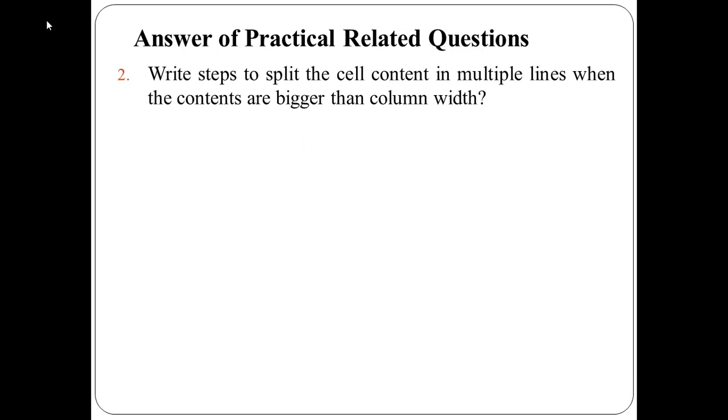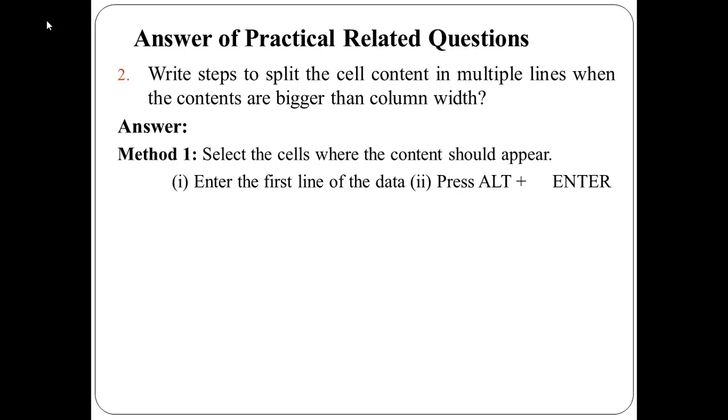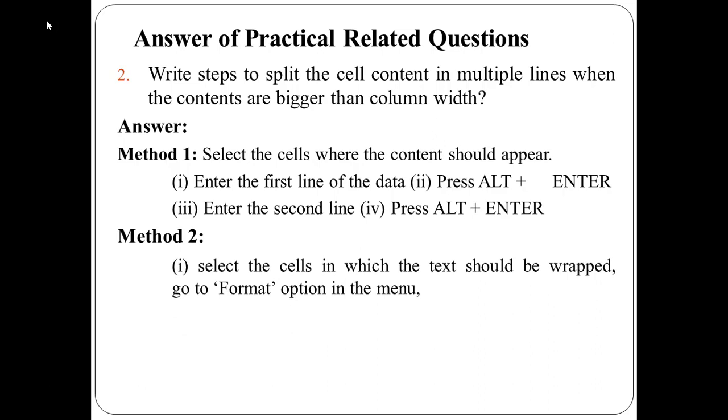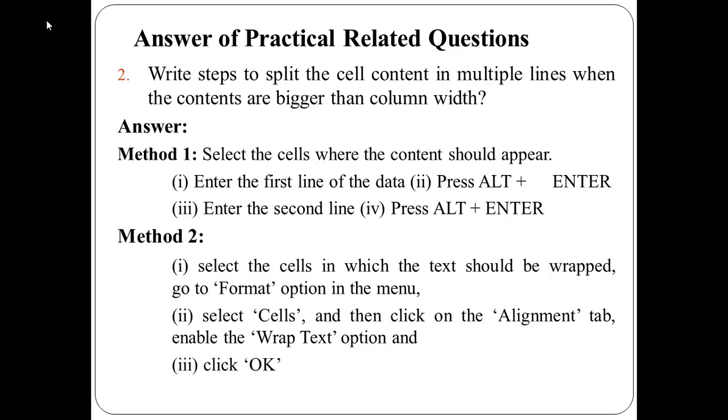The second question is write steps to split the cell content in multiple lines when the contents are bigger than the column width. The answer of this question is there are two different methods to do this operation. First method is select the cells when the contents should appear then enter the first line of data, press alt plus enter then enter the second line of data and then press alt plus enter. The second method is select the cells in which the text should be wrapped then go to format option in the menu select the cells and then click on the alignment tab. Enable the wrap text option and then click on ok button.